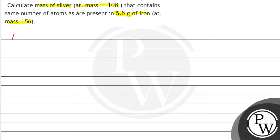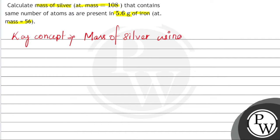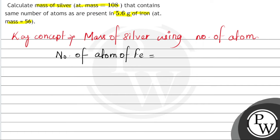So what is the key concept used here? The key concept used to solve this question is finding the mass of silver using the number of atoms. We use the condition that the number of atoms of iron is equal to the number of atoms of silver.